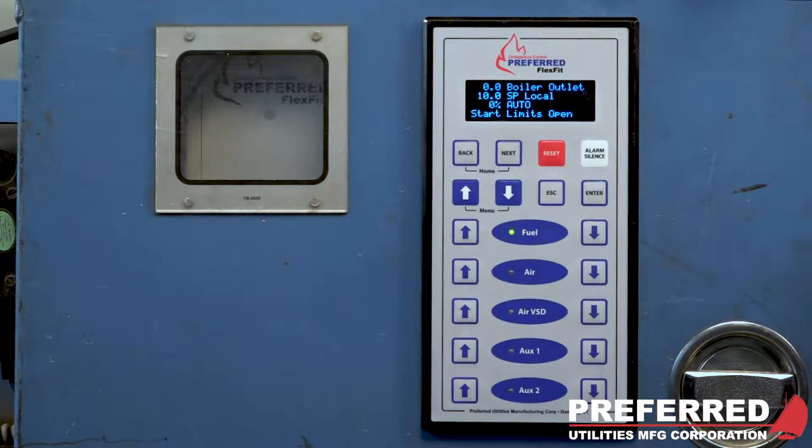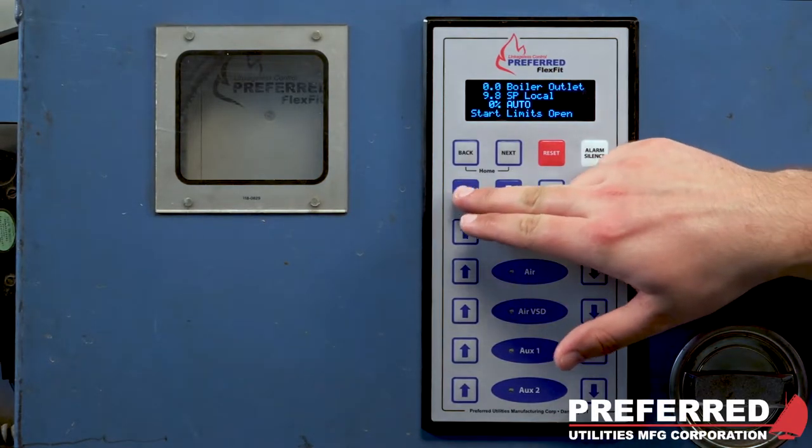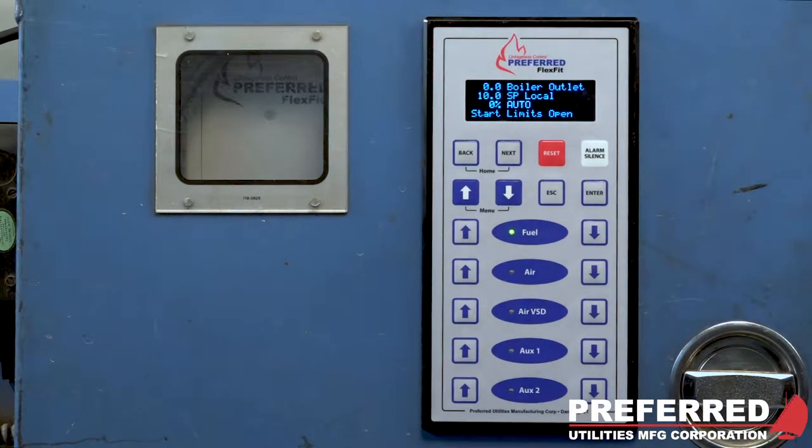Below that you will see the set point for that boiler outlet, and this is adjustable. You can do that by pressing enter then adjusting as needed. Below that it will show your firing rate percentage and whether you are in auto or manual, and below that it will give you any messages on your burner management state that you're currently in. Right now it is not running so it's saying start limits are open.